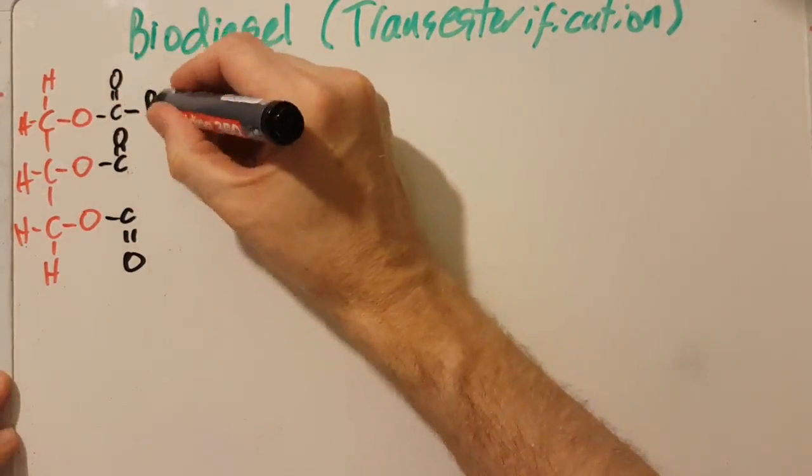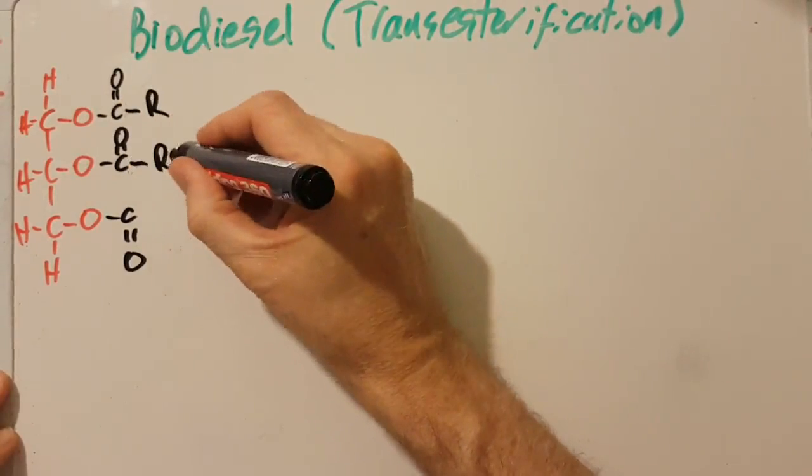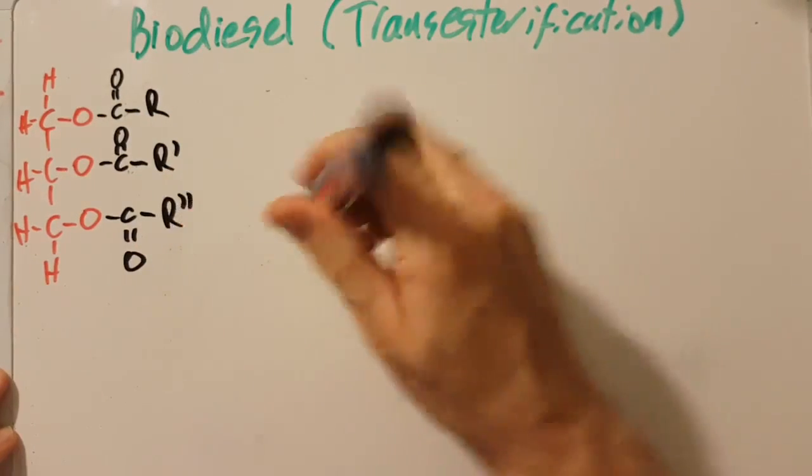So this branch is going to be R, this branch is R' and this last branch is R''.